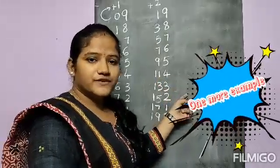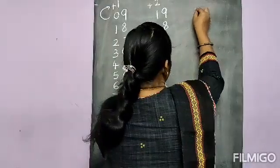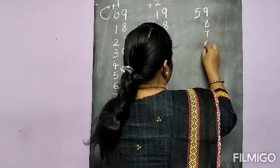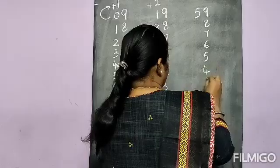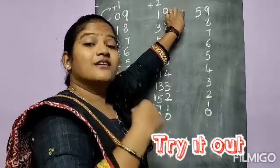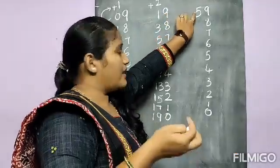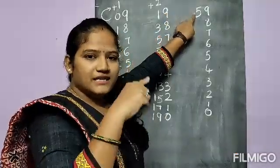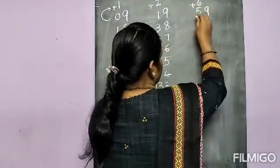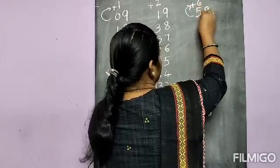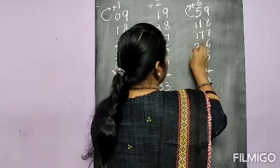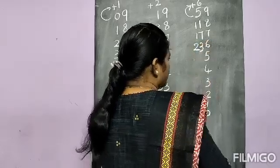Next I will go for the 59 table. 9, 8, 7, 6, 5, 4, 3, 2, 1, 0. Here also increase this 5 number by 1. So what will you get? It is 6, plus 6. 5 plus 6 is 11, then 17, 23.